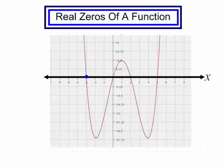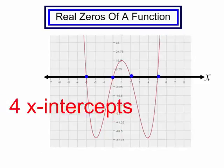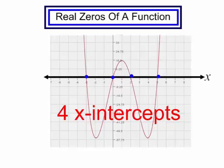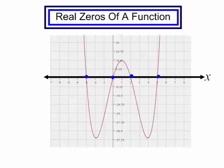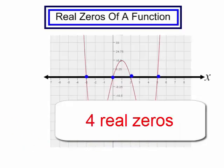This graph has one, two, three, four x-intercepts. So this function has four real zeros. Let's do one more.